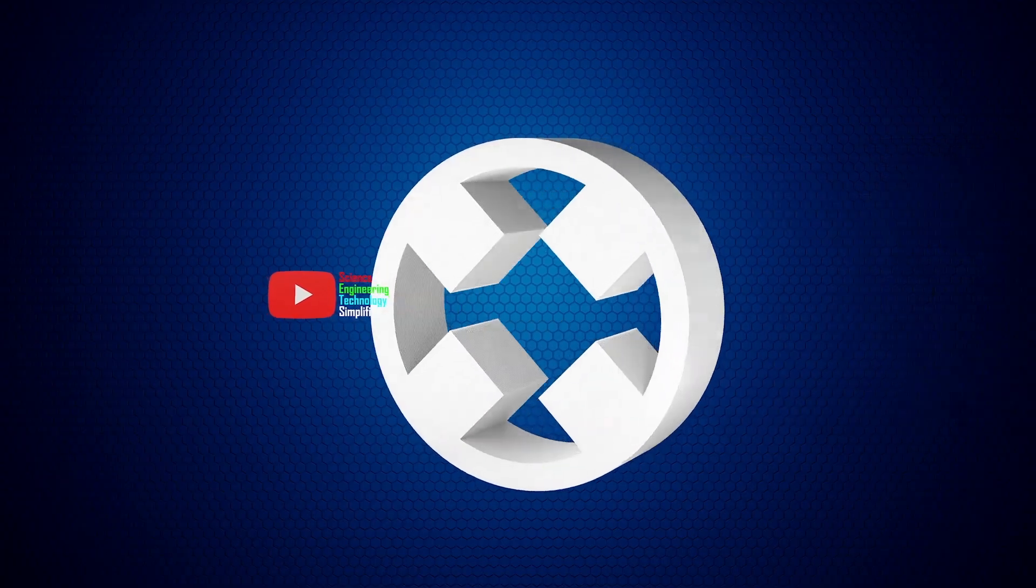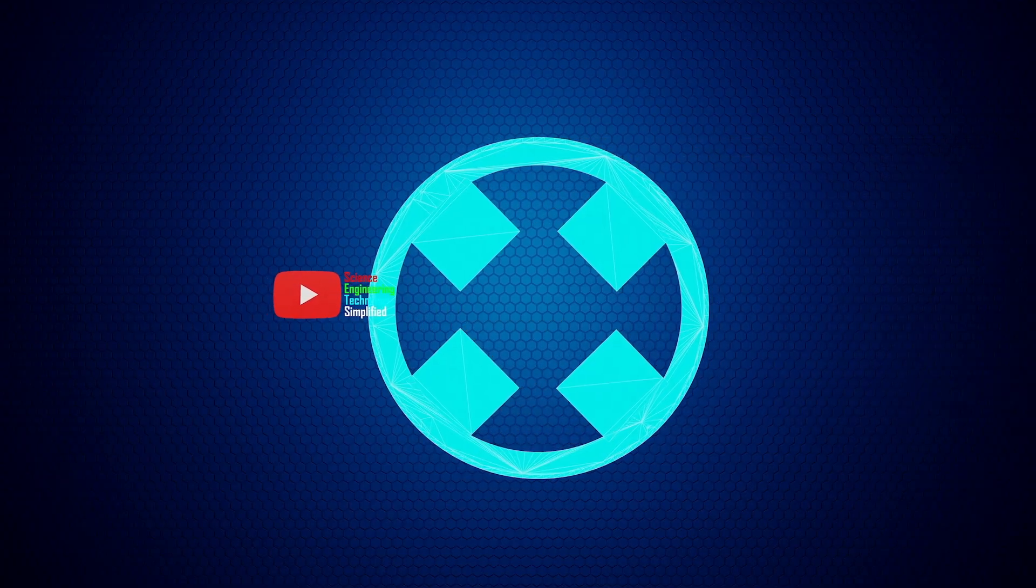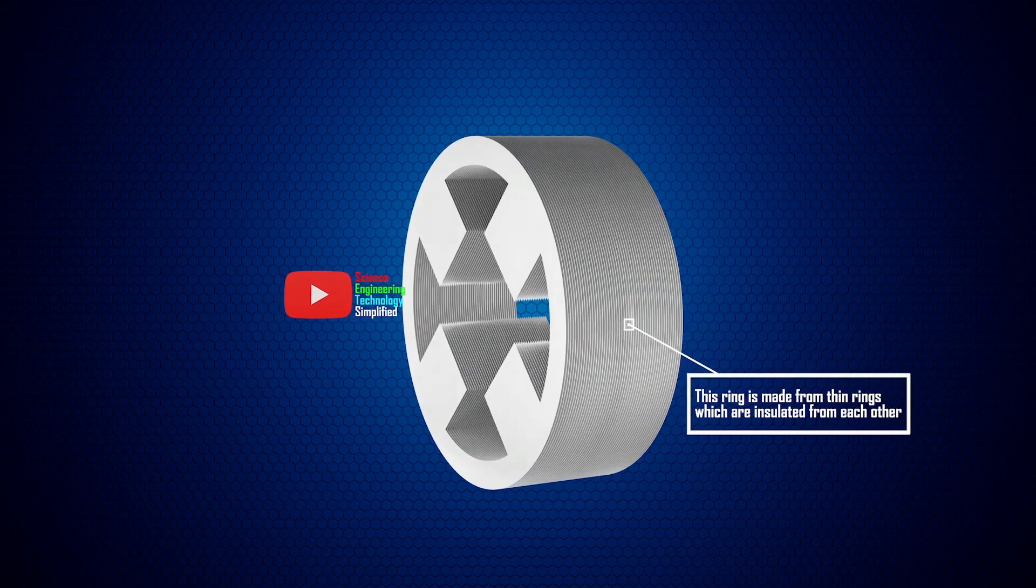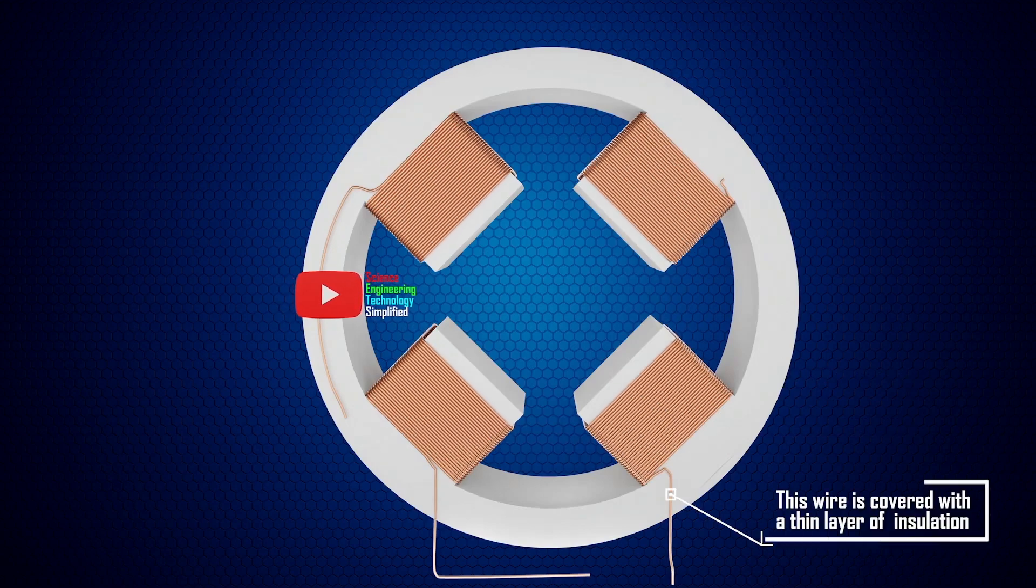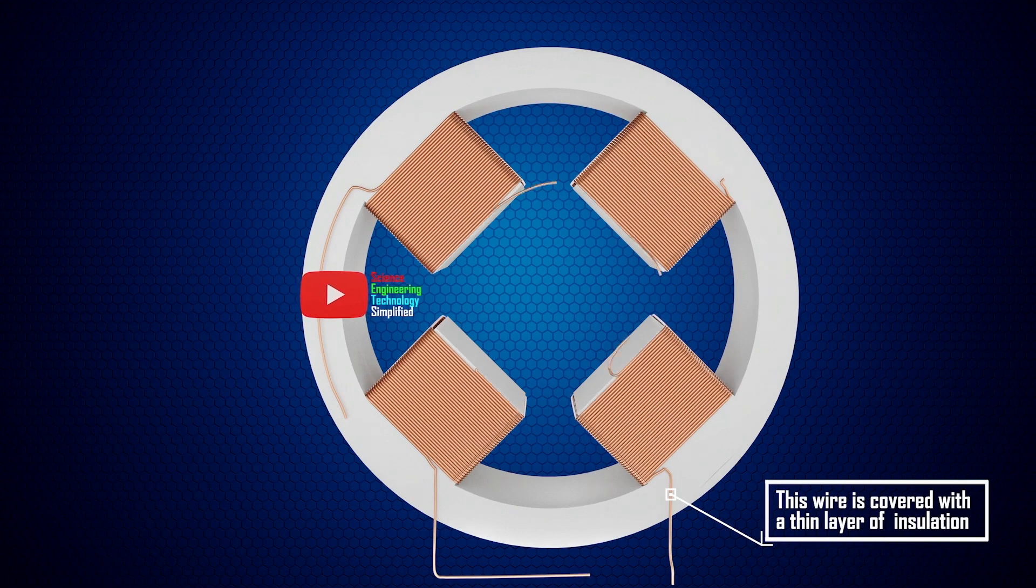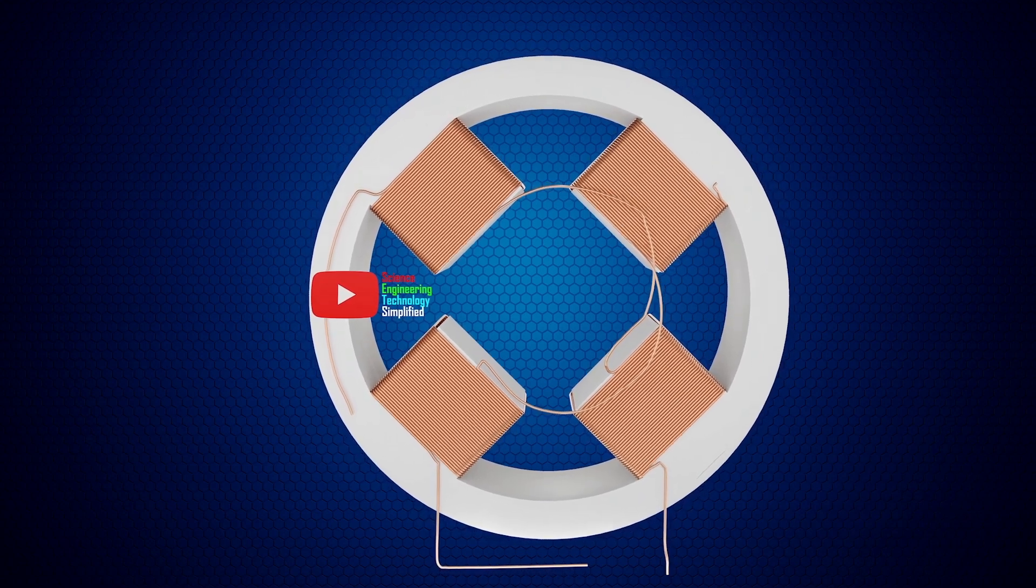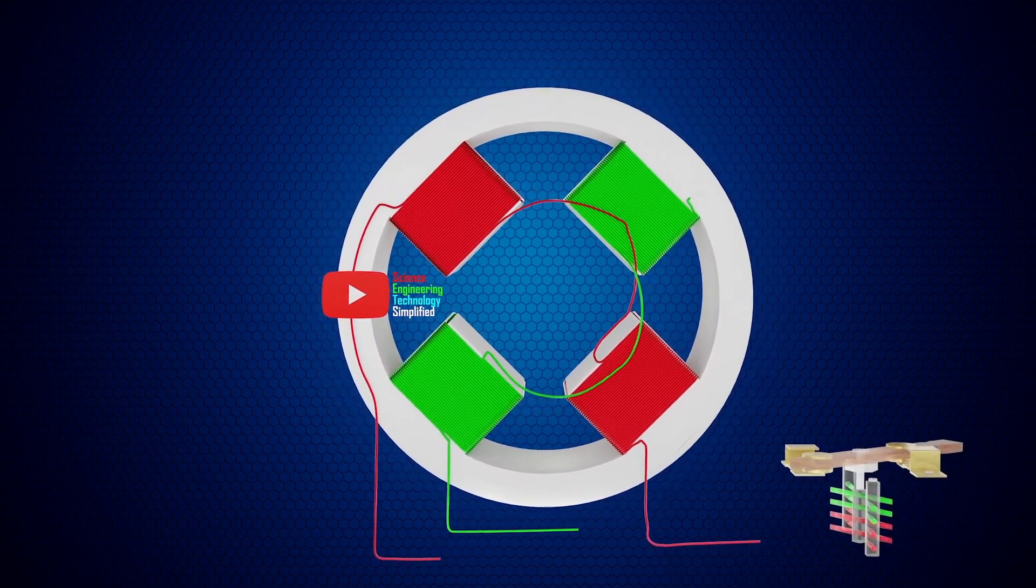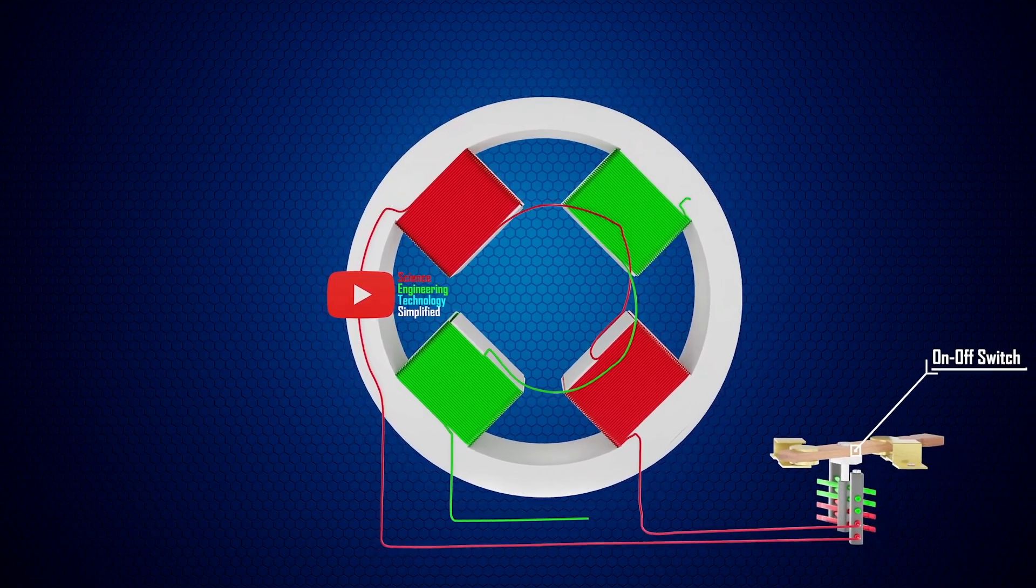The design of Tesla's AC induction motor. The motor comprises a ring, preferably built up of thin insulated iron rings so as to be as susceptible as possible to variations in its magnetic condition. This ring is surrounded by four coils of insulated wire. The diametrically opposite coils are connected. To make our understanding clear, let us take two different colors for these circuits. The four free ends are connected to an on-off switch.